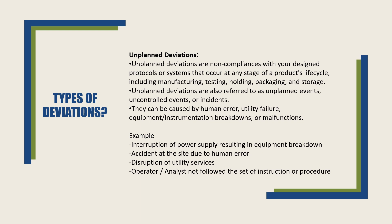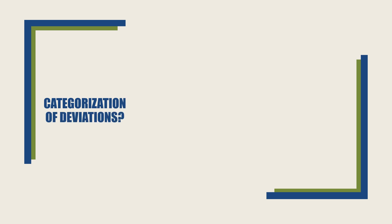Unplanned deviations are also referred to as unplanned events, uncontrolled events or incidents. They can be caused by human error, utility failure, equipment or instrumentation breakdown or malfunction. Examples of unplanned deviations include an interruption of power supply resulting in equipment breakdown, accidents at the site due to human error, disruption of utility services, and an operator or analyst not following the standard operating procedure.